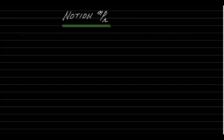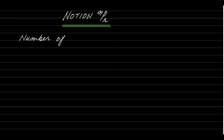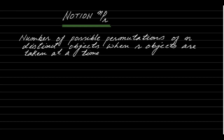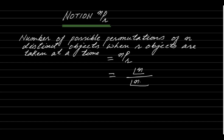Next, we discuss the notation NPR. The number of possible permutations of N distinct objects when R objects are taken at a time is equal to NPR, which is numerically equal to N! divided by (N−R)!, also written as N factorial upon (N minus R) factorial.